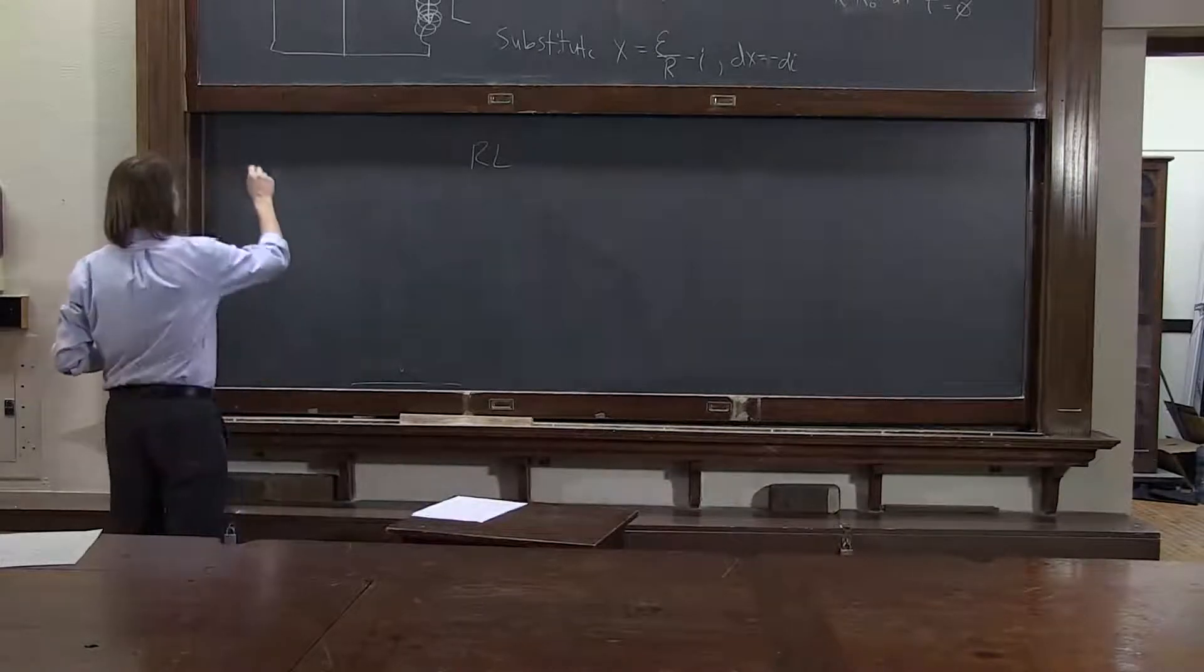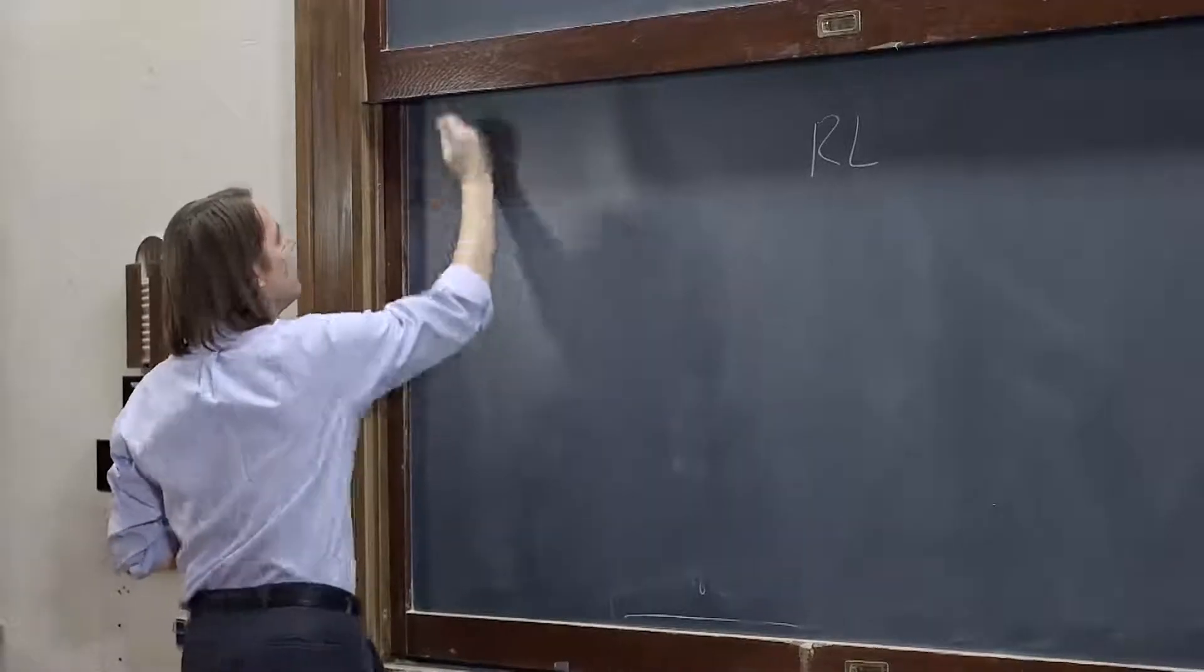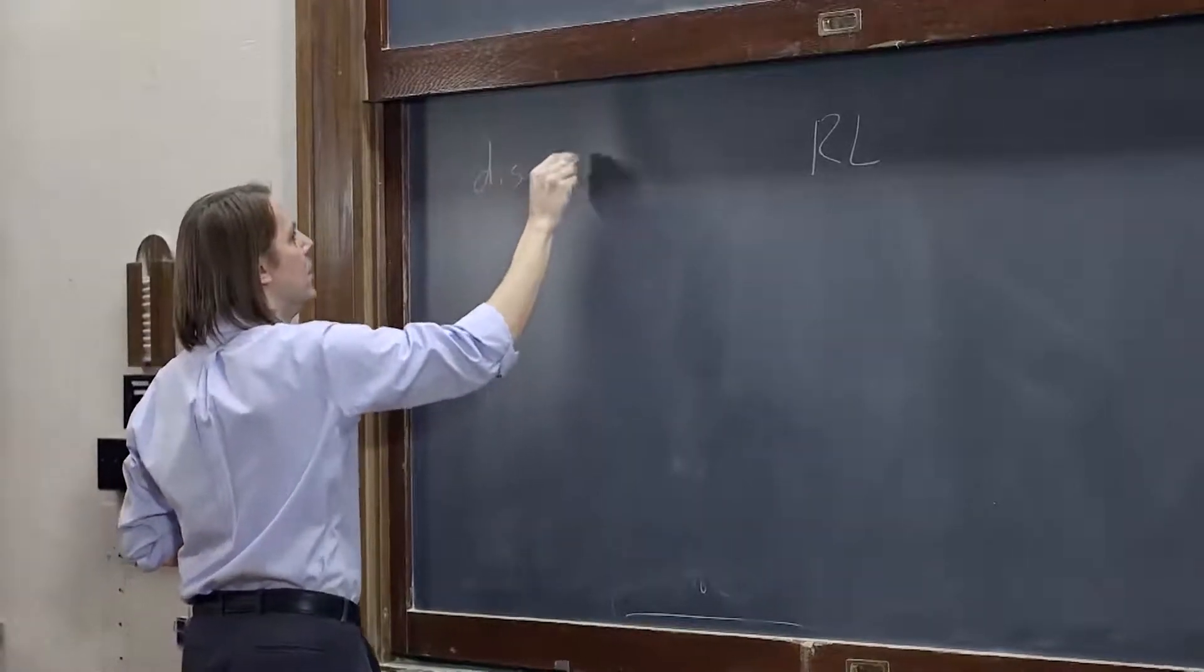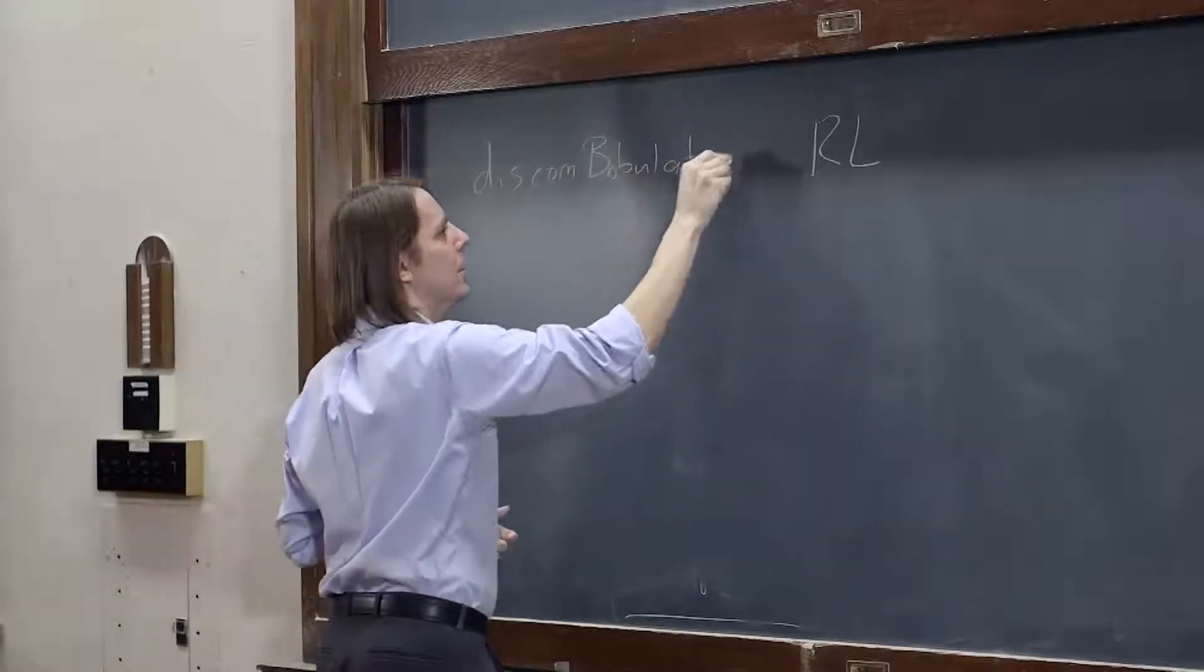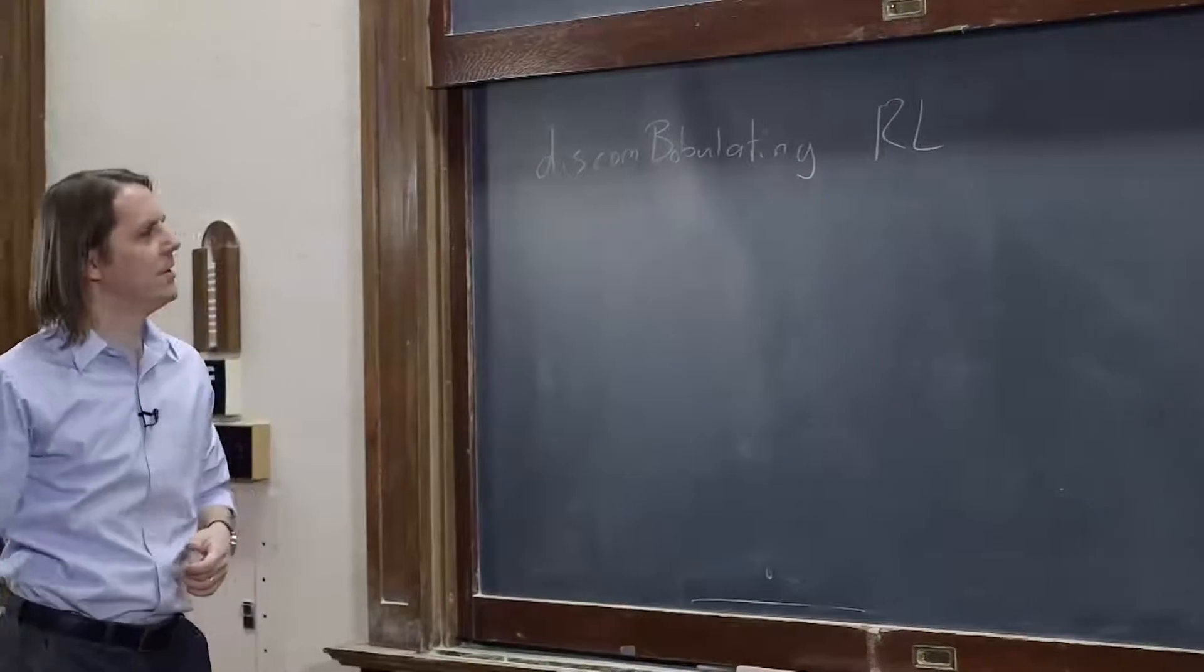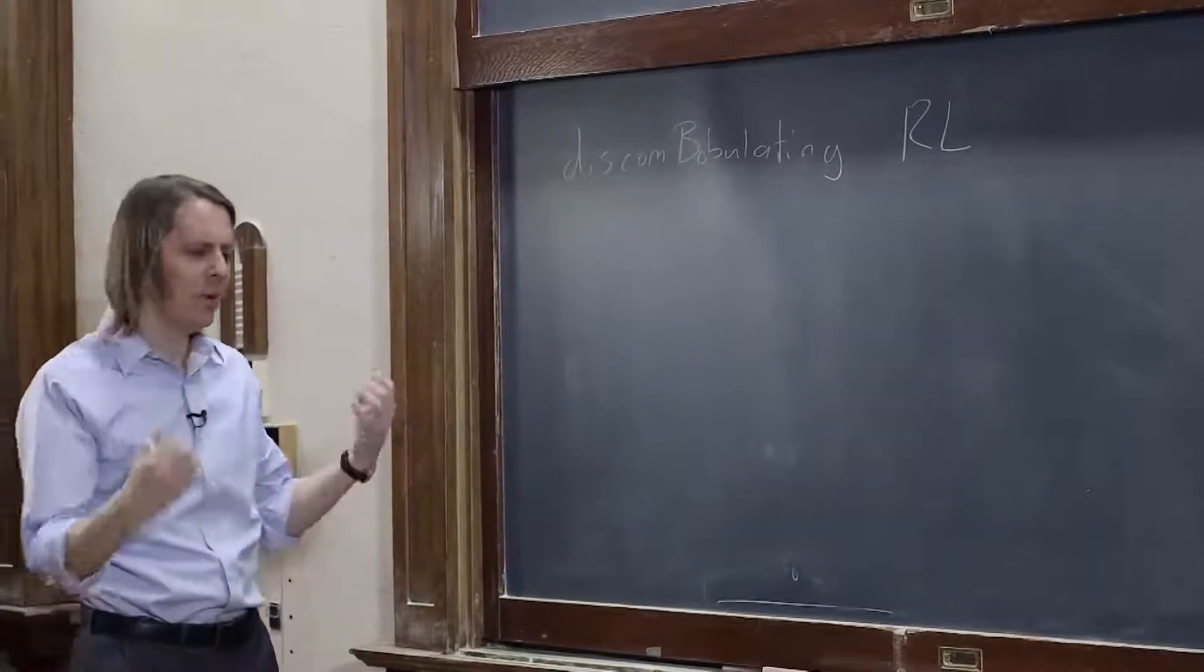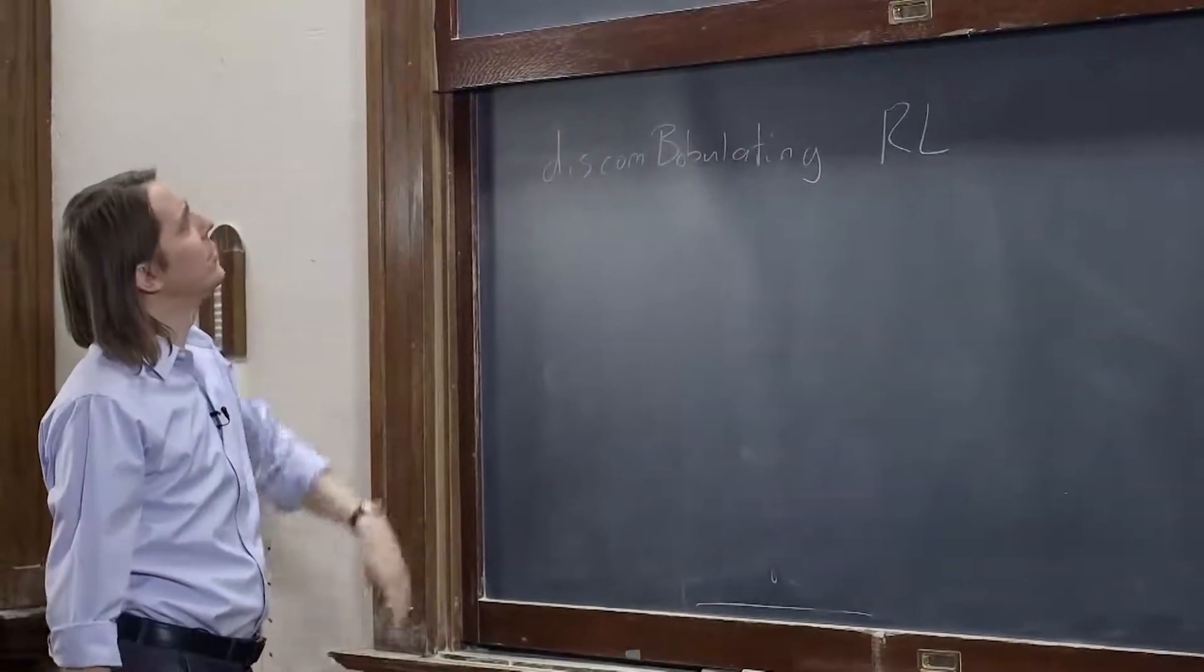You're turning the field off. I'm going to create the word. You're discombobulating. There you go. We're going to discombobulate the RL. And it's got a B in it, so there you go.